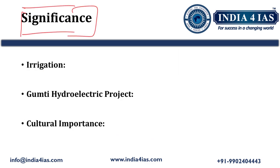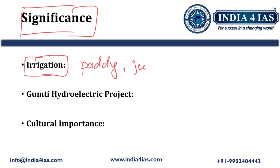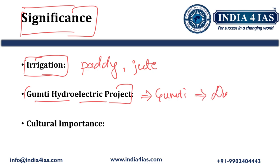Coming to the significance of the Gumti River: the first is irrigation. It provides irrigation facility to agriculture in the state of Tripura. Major crops grown because of this irrigation include paddy, jute, and other commercial crops. The second significance is generation of hydroelectricity. There is a Gumti Hydroelectric Project built over the Gumti River, located near Dumbur Lake in Tripura. This hydroelectric project is a key source of electricity in the region and also helps in flood control.